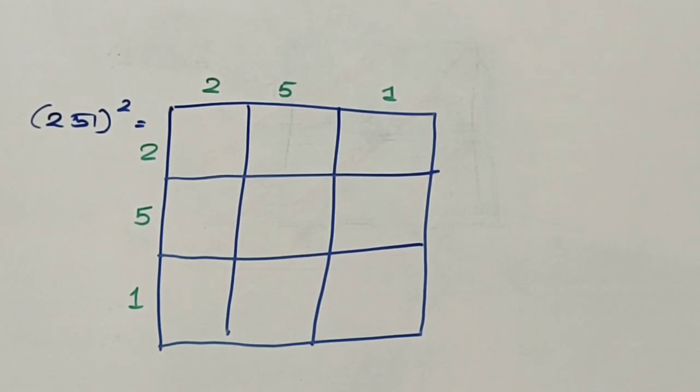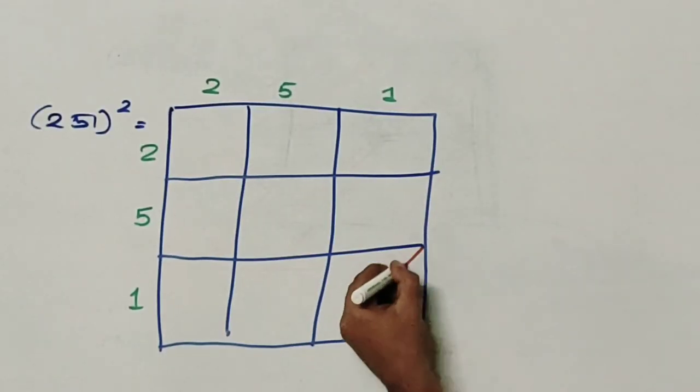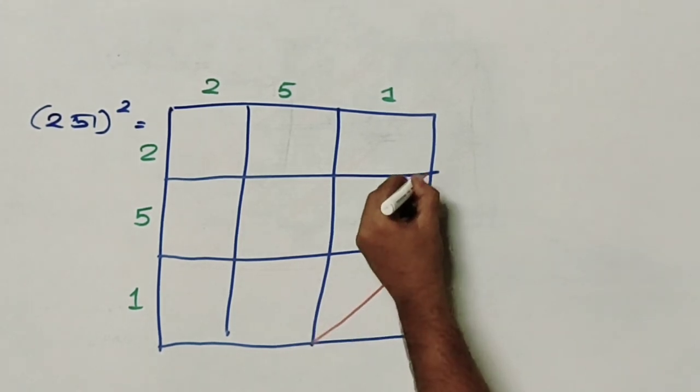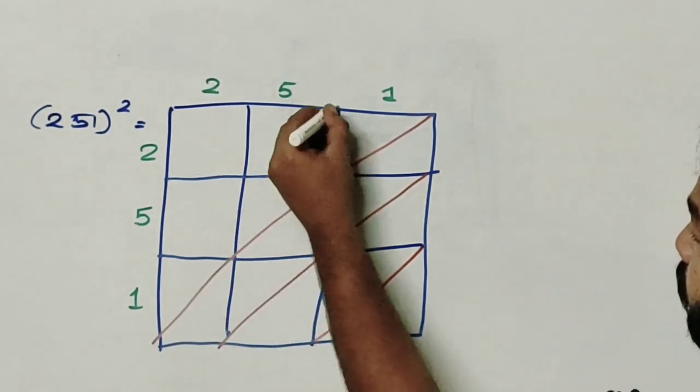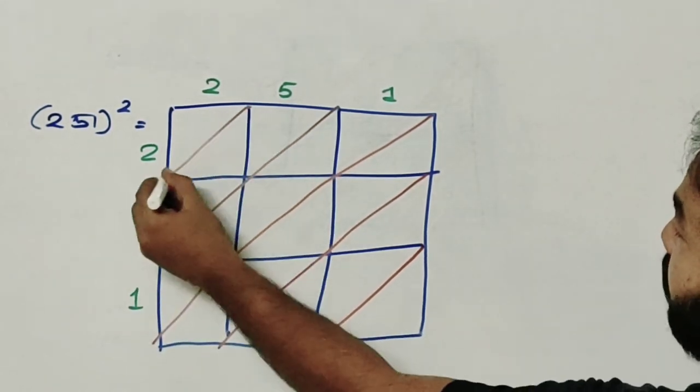So we will form the diagonals which are possible. There will be five diagonals total.